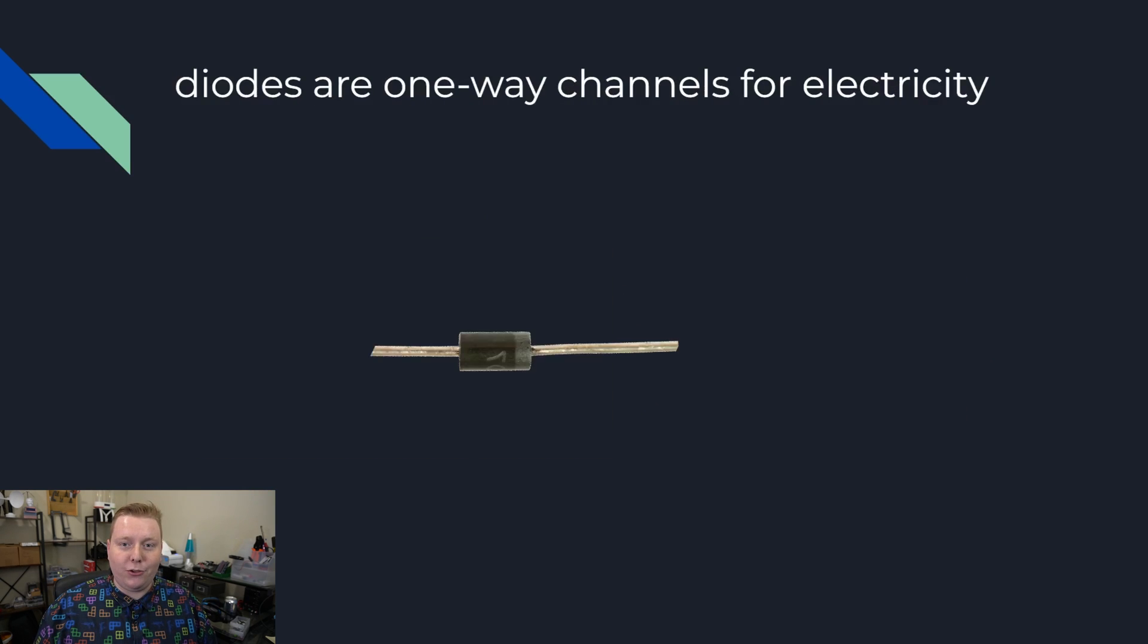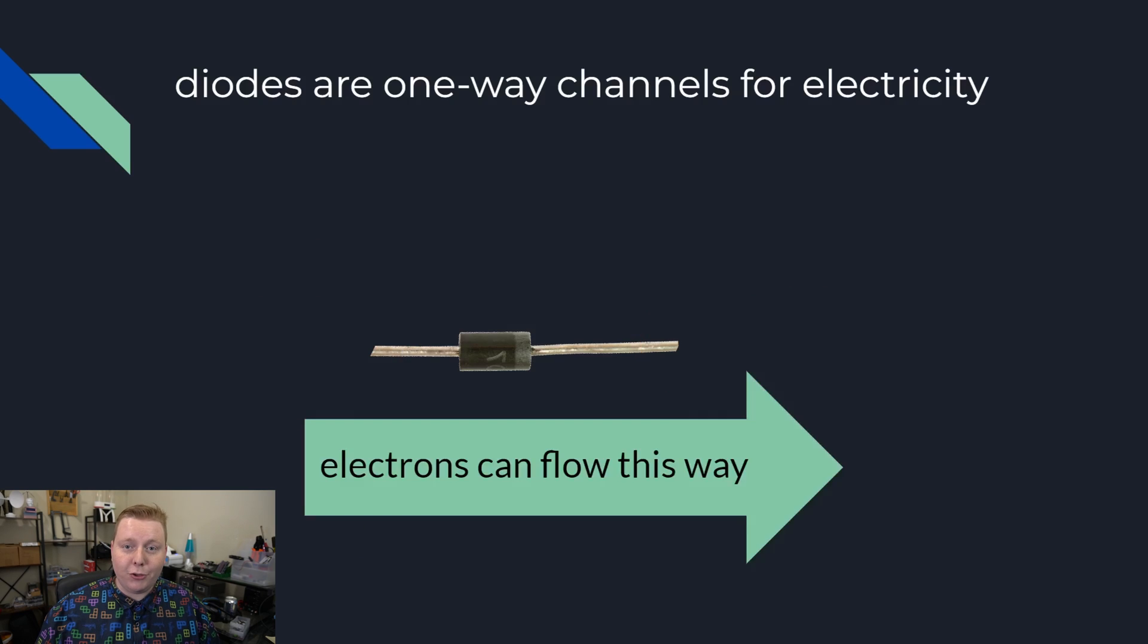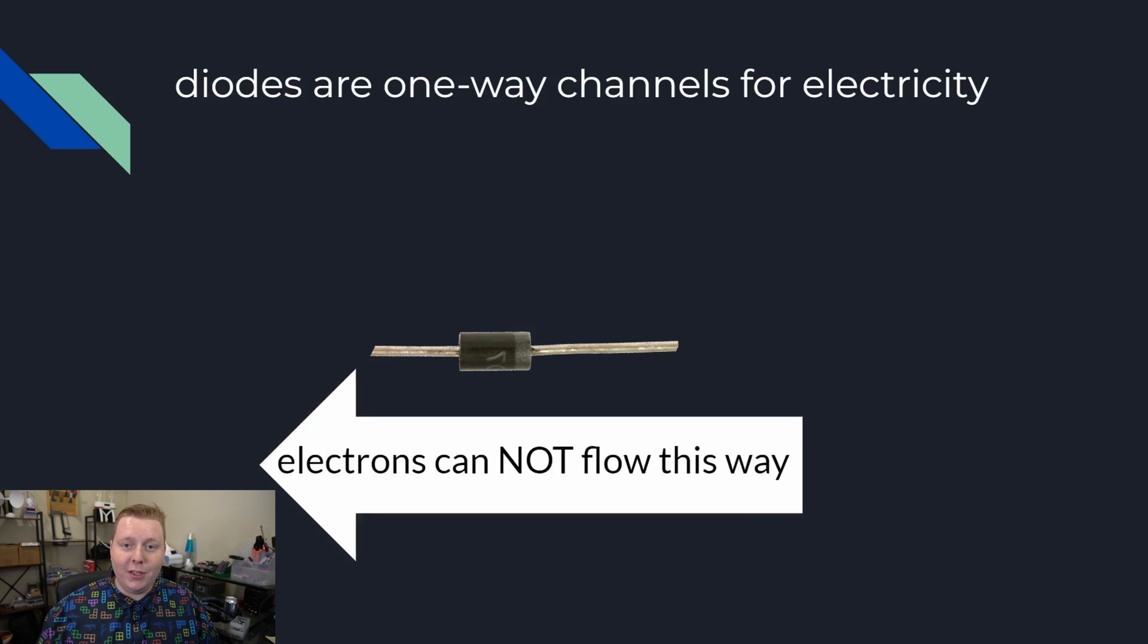Diodes are like one-way channels for electricity. If you put 5 volts here, you'll see 5 volts here because the electricity flowed through it. But if you put 5 volts here, you will read nothing here because the electricity can't flow this way. Electrons can flow this way, electrons cannot flow this way.